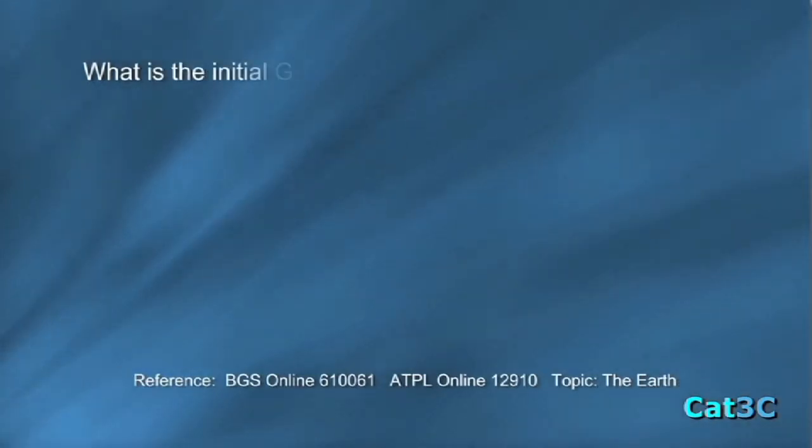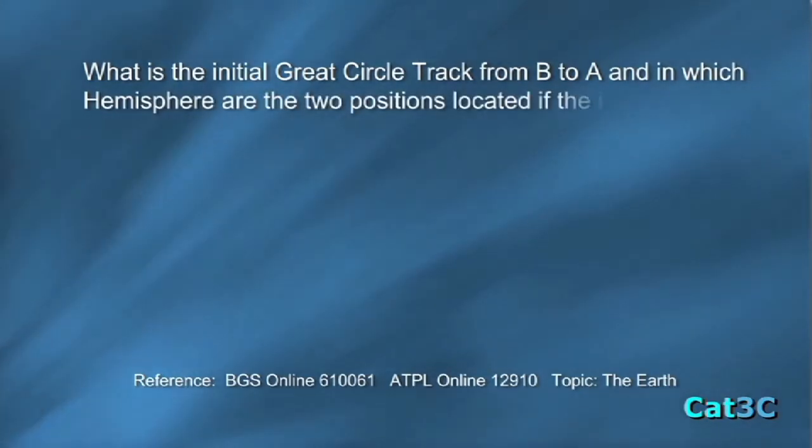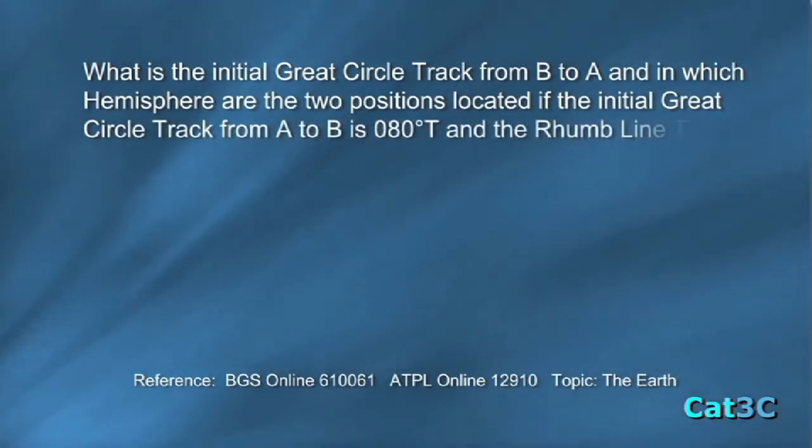What is the initial great circle track from B to A and in which hemisphere are the two positions located if the initial great circle track from A to B is 080 degrees true and the rum line track from A to B is 083 degrees true?